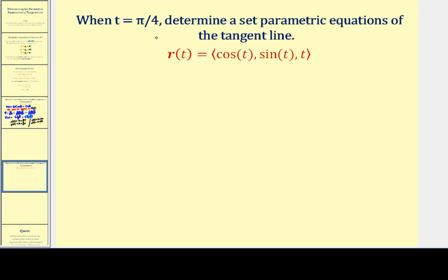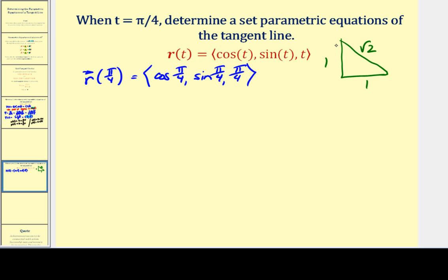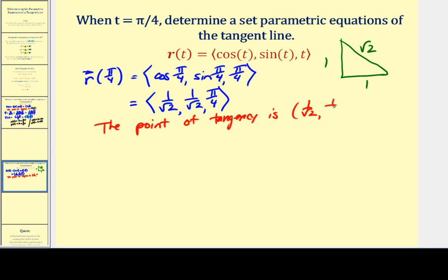Let's look at one more example. When t = π/4, we want parametric equations of the tangent line defined by a space curve. We begin by finding the point of tangency at t = π/4. Using the 45-45-90 right triangle, cos(π/4) = 1/√2, sin(π/4) = 1/√2, and the z component is π/4. So the point of tangency has coordinates (1/√2, 1/√2, π/4).